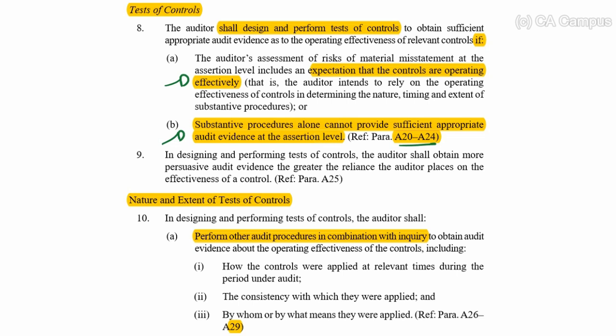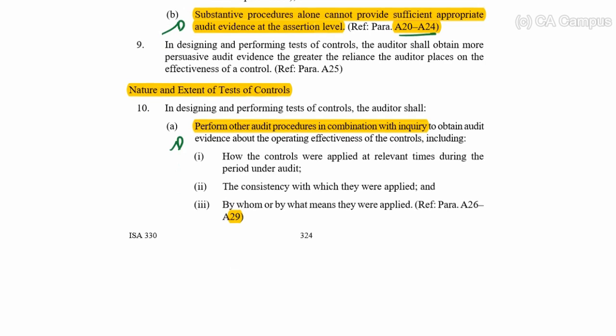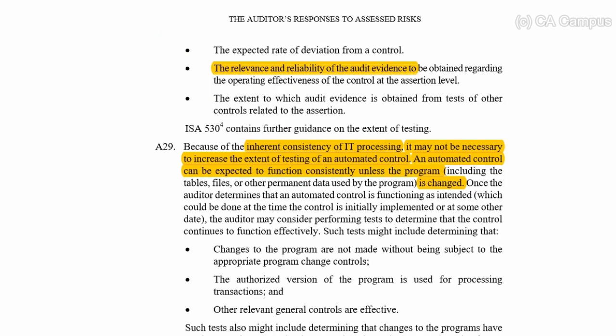Additionally, you cannot only do inquiry — you must test how the control was performed, its consistency, and by whom. A29 notes that because IT processing is consistent, an automated control can be expected to function consistently unless the program is changed, so you would only need to test it once rather than having a large sample.